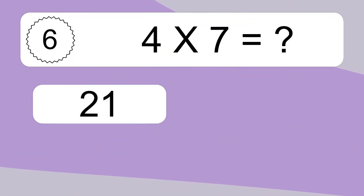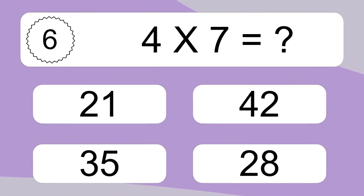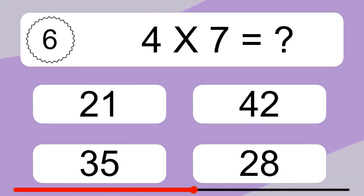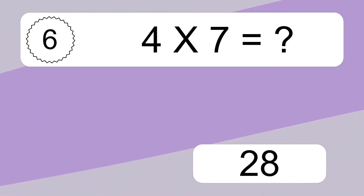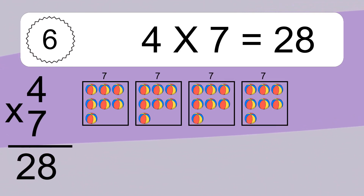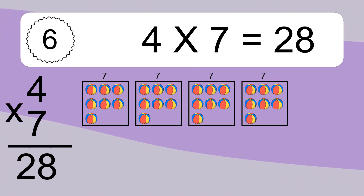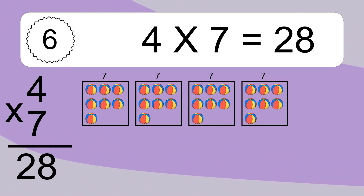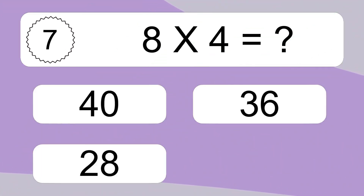4 times 7 equals what? 4 times 7 equals 28. We have 4 boxes and each box has 7 colorful balls inside. If you count all the balls in all the boxes together, you will have 4 times 7 balls. This equals 28 balls.